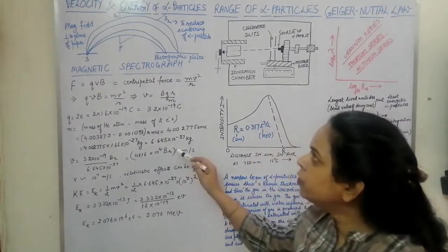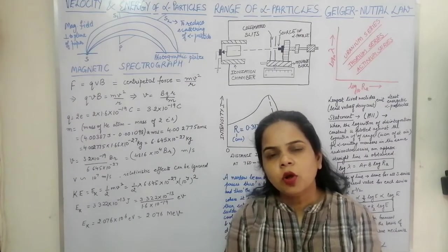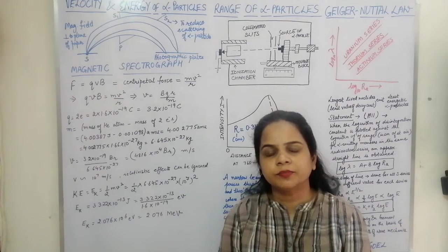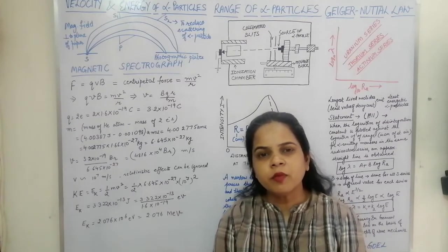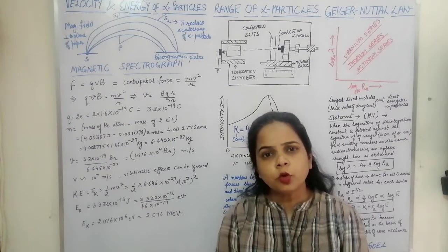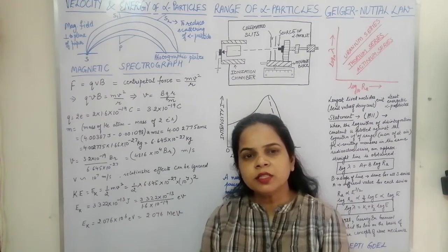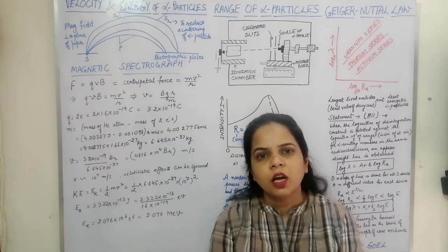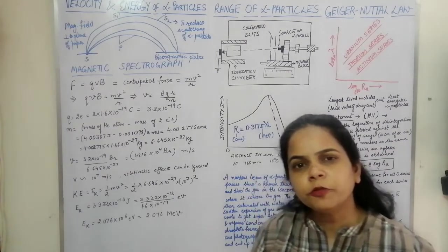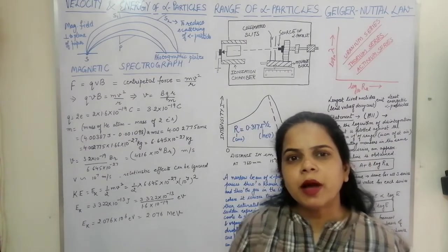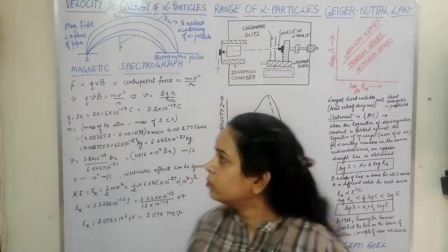In this module, we start with the velocity and energy of alpha particles. As you all know, an alpha particle is a helium nucleus, consisting of two protons and two neutrons. Since it is a massive nucleus, the velocity of the alpha particle is less compared to that of an electron, beta particle, or positron.